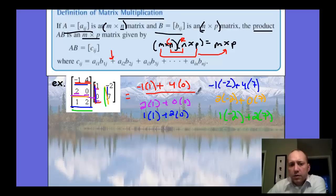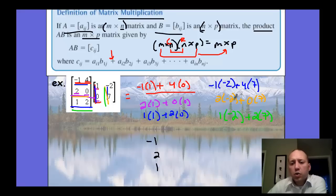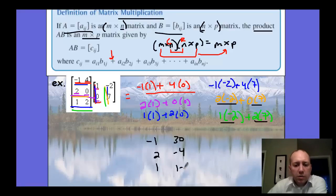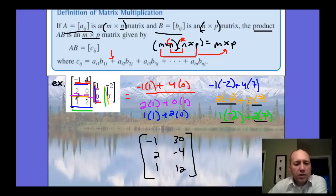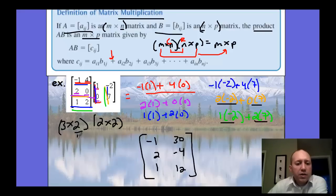Computing the results: negative one plus zero gives negative one; two plus zero gives two; one plus zero gives one. Next column: two plus 28 is 30; negative four plus zero is negative four; negative two plus 14 is 12. You can verify: this is a three by two matrix times a two by two, so since the inner dimensions match, the result is a three by two — which is what we have.